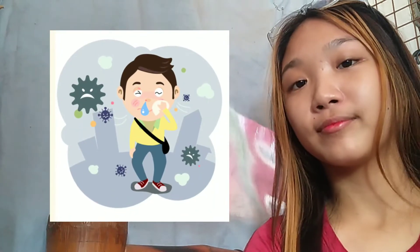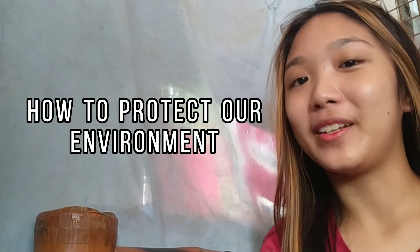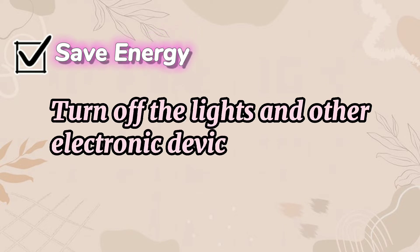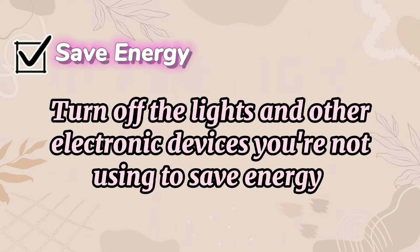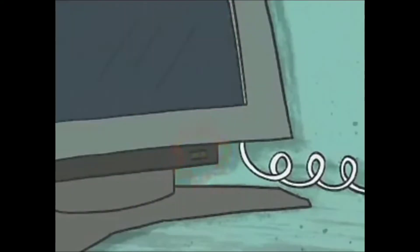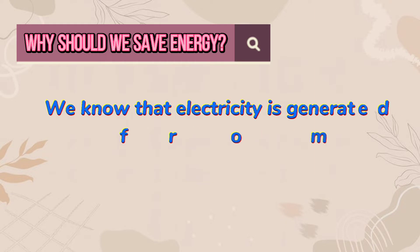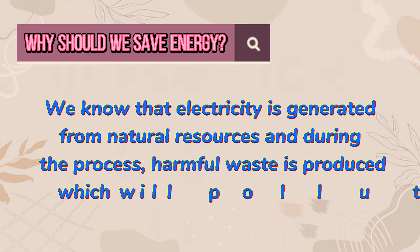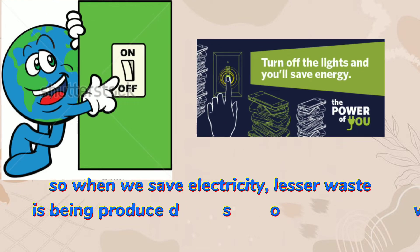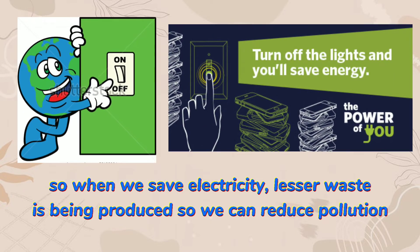And now let's begin on how to protect our environment. First, we need to learn how to save energy — turn off the lights and other electronic devices you're not using. We know that electricity is generated from natural resources, and during the process harmful waste is produced which will pollute the environment. So when we save electricity, less waste is being produced and we can reduce pollution.